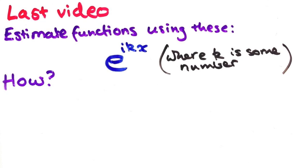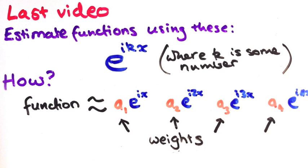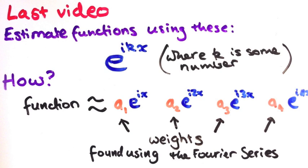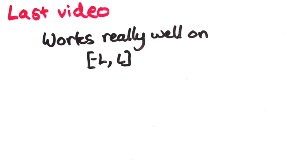Remember, if we wanted to estimate some function, we multiplied each of the exponential functions by a number called its weight, and then we added the exponentials together. The Fourier series tells us which weights to use. We found that for a lot of functions, this worked really well.